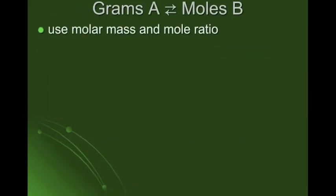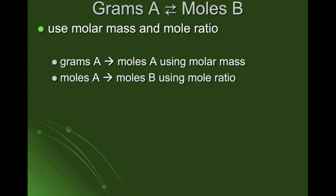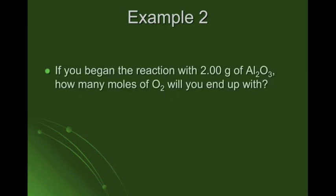Now we're going to do a grams-to-mole conversion. We'll use both the molar mass and the mole ratio — two conversion factors. First, we convert from grams of A to moles of A using molar mass. Then from moles of A to moles of B using the mole ratio. So compared to a mole-to-mole conversion, we're just adding one extra step.